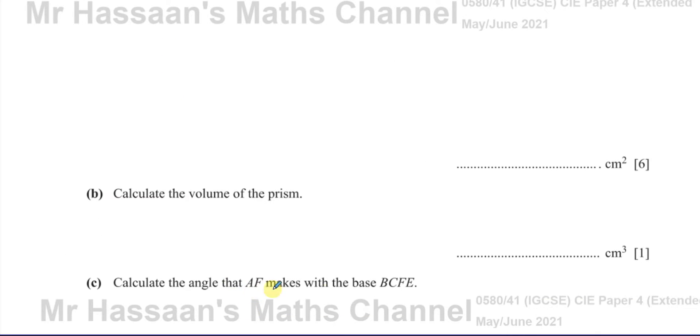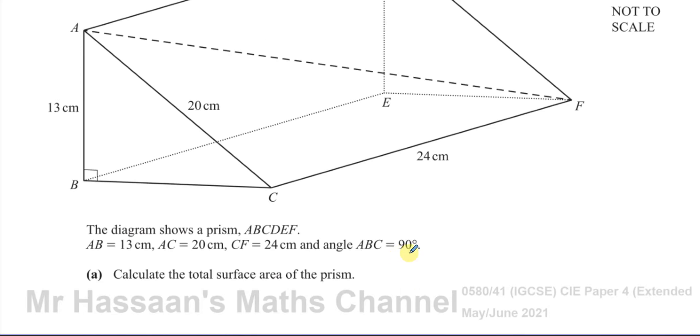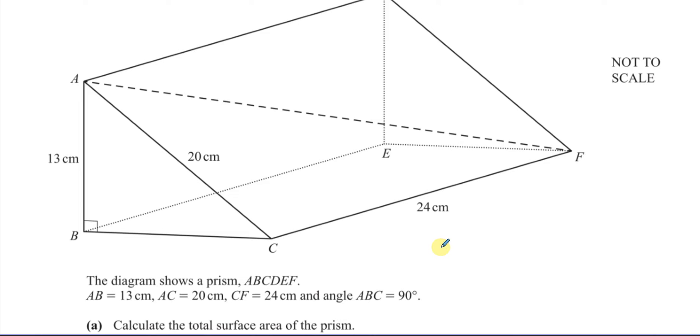So first of all it says, the diagram shows a prism ABCDEF, it looks like it's a triangular prism. It says AB equals 13cm, AC equals 20cm, CF equals 24cm, and angle ABC equals 90 degrees. Calculate the total surface area of this prism.